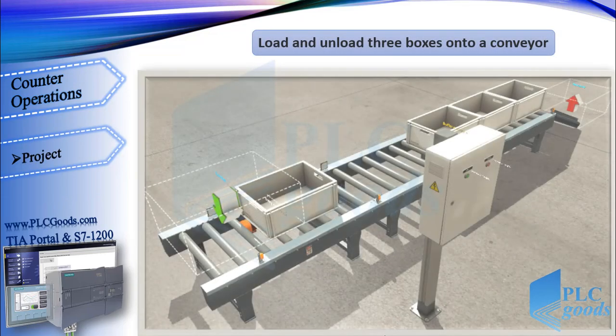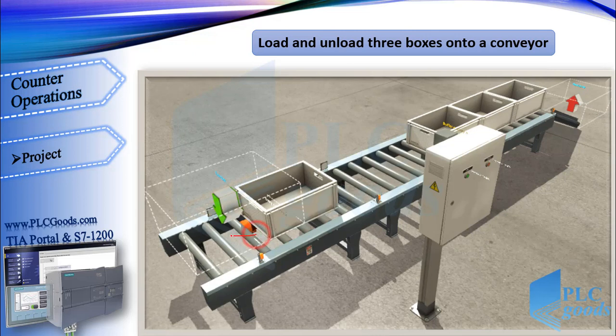Let me define a project with Factory IO. The project is to load and unload three boxes onto a buffer conveyor. Here we have two conveyors called the entry conveyor and the buffer conveyor, and three sensors and two push buttons to start and stop.